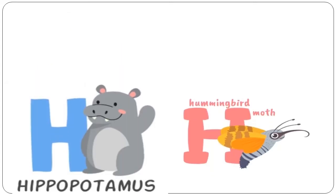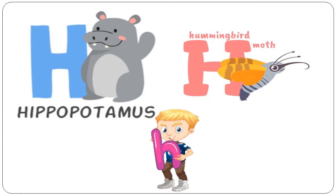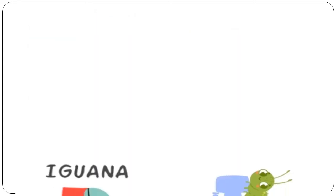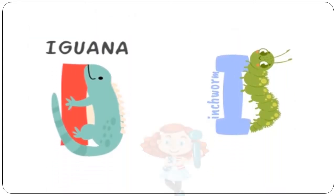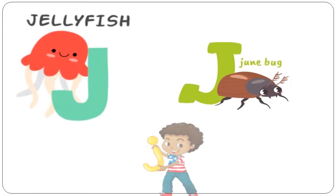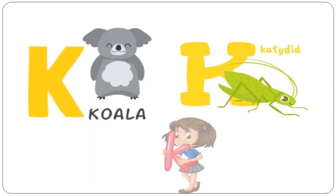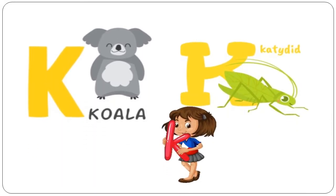H is for Hippopotamus. H is for Hummingbird Moth. I is for Iguana. I is for Inchworm. J is for Jellyfish. J is for Junebug. K is for Koala.